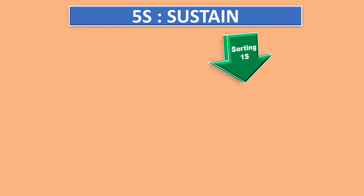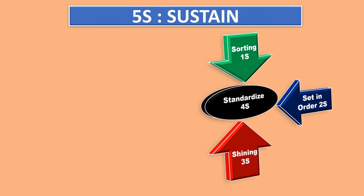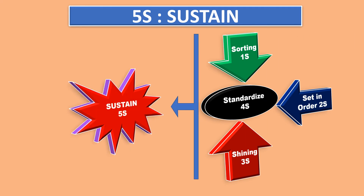Now let us see 5S, that is sustain. We have done sorting — 1S; set in order — 2S; shining — 3S; and standardize — 4S. Now we have to maintain all these four again and again. Then 5S, that is sustain, will be maintained. This is the methodology of sustain.